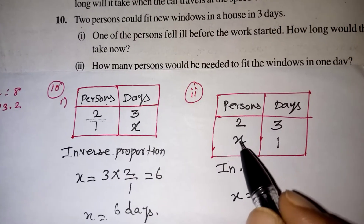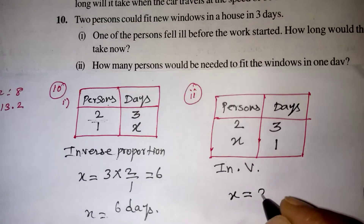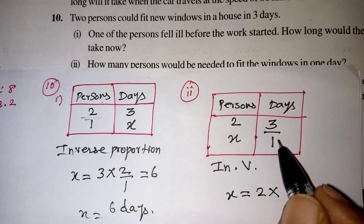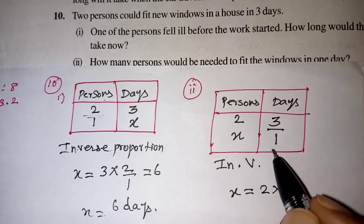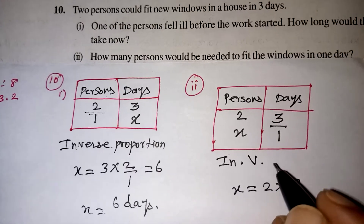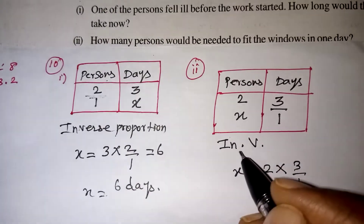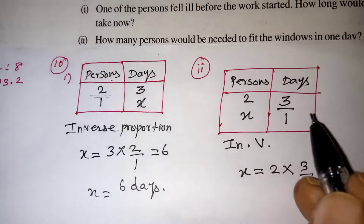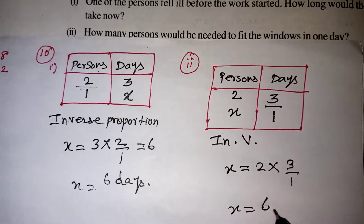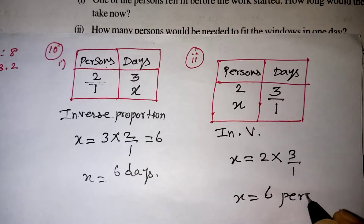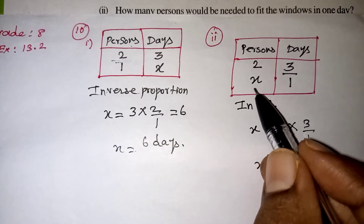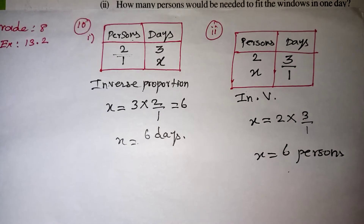So now first take the variable x, which is equal to the number along with x, that is 2, multiplied by. Here 3 and 1 are given, so both are numbers — take it as the fraction 3 by 1. Since it is an inverse variation, we are taking this number as it is. If it were a direct variation, this would be taken reciprocally. So denominator 1 you can leave, so x equals 2 times 3, which is 6. So 6 persons working means the work will be completed in one day. That is your correct answer.